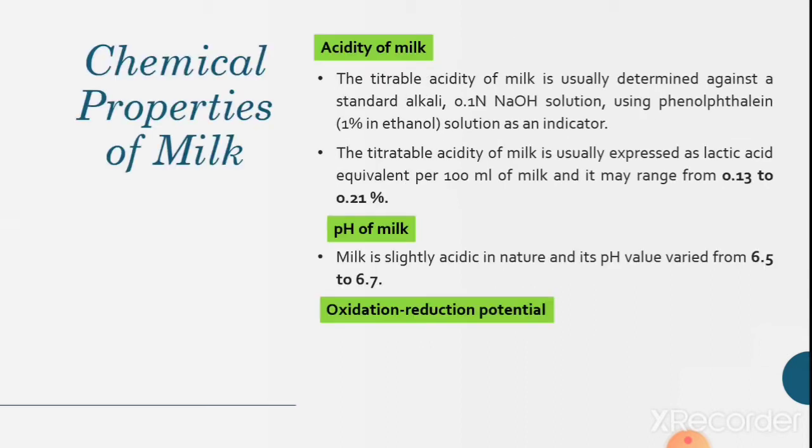The next property of the milk is chemical properties. The chemical property includes acidity of milk. The titratable acidity of milk is usually determined against standard alkali 0.1 normal NaOH solution using phenolphthalein 1% in ethylene solution as an indicator. The titratable acidity of milk is usually expressed as lactic acid equivalent per 100 ml of milk and it may range from 0.13 to 0.21%. pH of milk: milk is slightly acidic in nature and its pH value varies from 6.5 to 6.7.